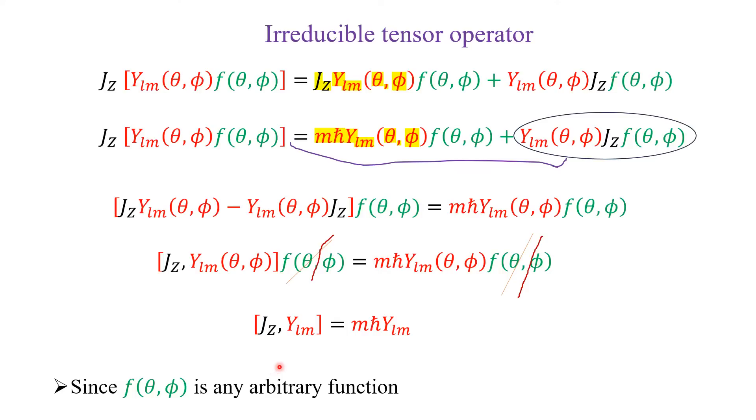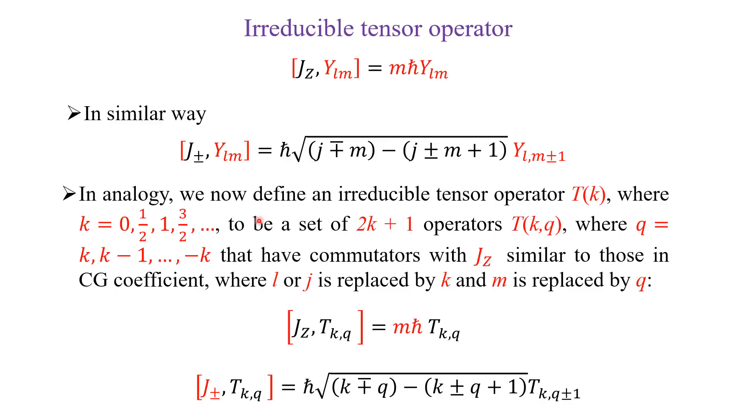So, the commutation between J_z and Y_{l,m} is equal to M ℏ Y_{l,m}. So, we have seen the commutation between J_z and Y_{l,m} is equal to M ℏ Y_{l,m}.